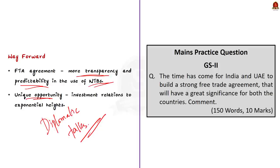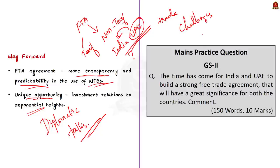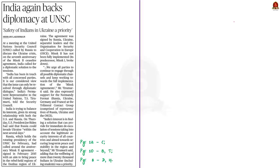That's all regarding this editorial. We have seen about free trade agreements, tariff and non-tariff barriers, India-UAE trade relations including export and import items, how UAE would help India achieve its merchandise export target, the challenges in India-UAE trade, and the solutions to those challenges. With these key points in mind, let's move on to the next news article.